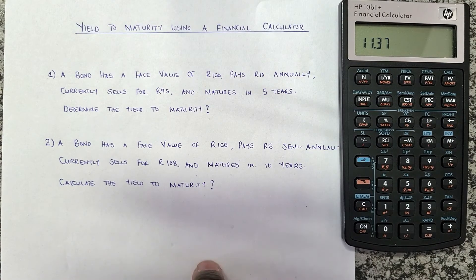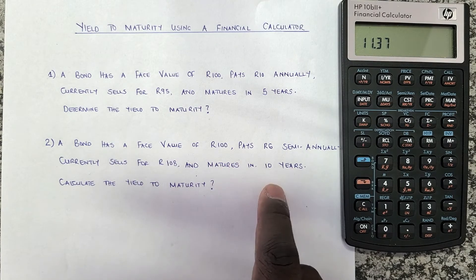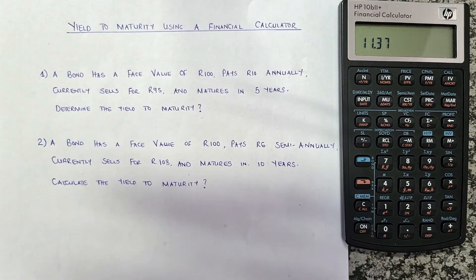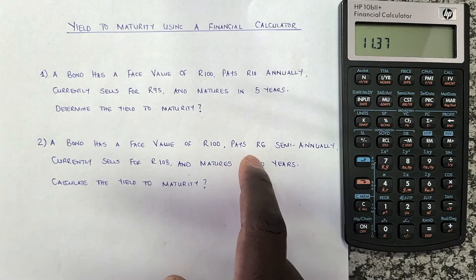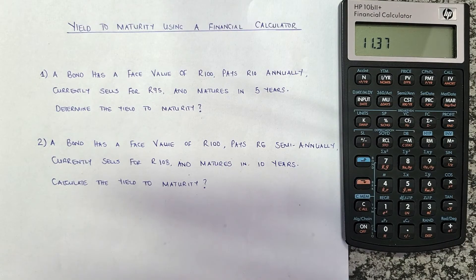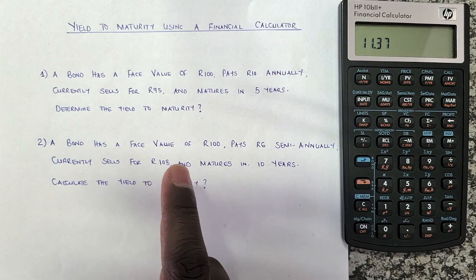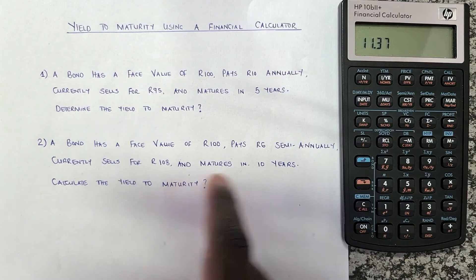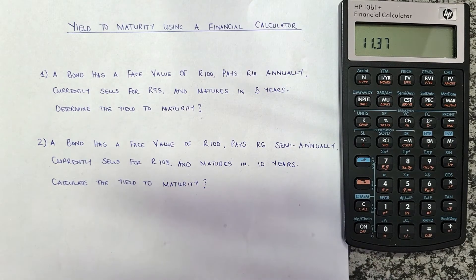Now let's do the second example. A bond has a face value of 100 rand — we know that is the future value. It pays 6 rand semi-annually, meaning twice per year, every six months. It currently sells for 108 rand — that is the present value, how much the bondholder has to pay today. It matures in 10 years — that is our N. Calculate the yield to maturity.